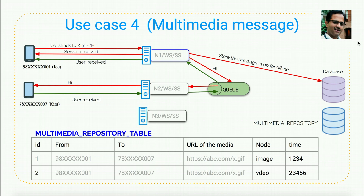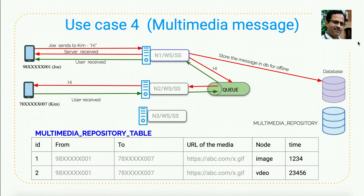Note that the URL is stored in the multimedia repository table while the actual image or multimedia content is in a separate storage location called the multimedia repository. Node 1 then sends the message to the queue; node 2, configured for Kim, picks it up and sends it to Kim. At this point Kim has received only the URL of the multimedia message, not the multimedia itself. When Kim opens the app and clicks the URL, it connects to the multimedia repository and downloads the content. Once downloaded, in WhatsApp, the multimedia message is deleted from the backend to keep the system lightweight.